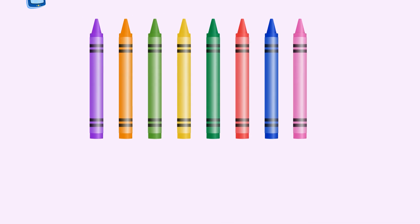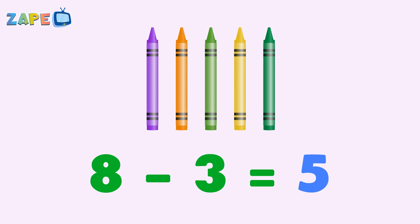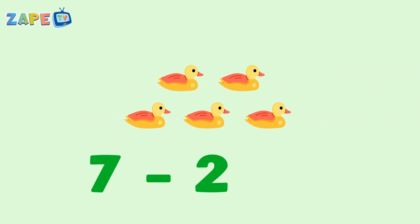Eight bright crayons in my hand. Take away three, five left to stand. Seven small ducks swimming in the pond. Two swim away, now five are beyond.